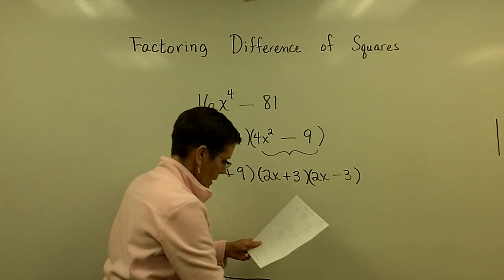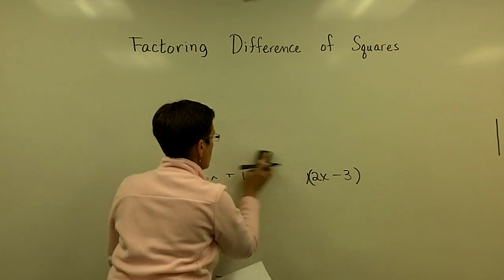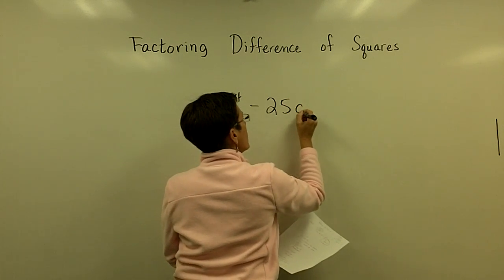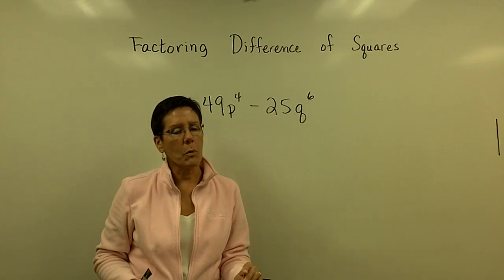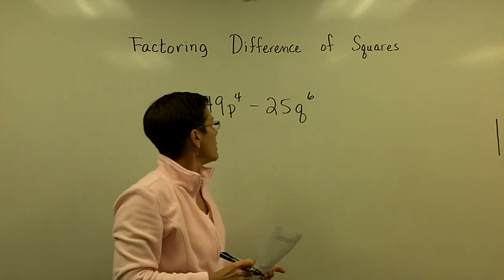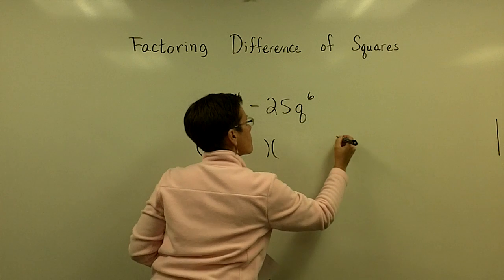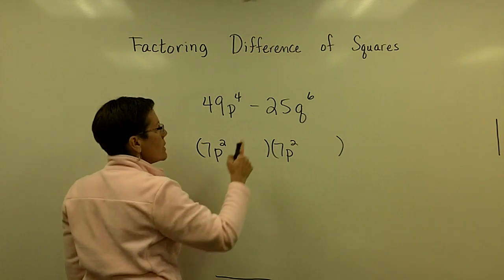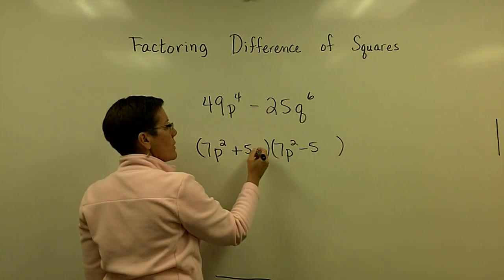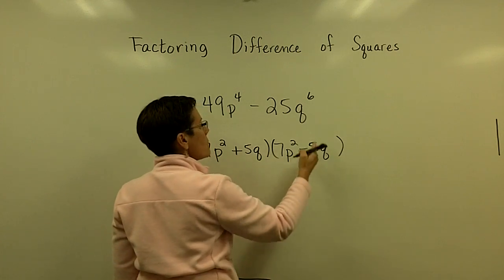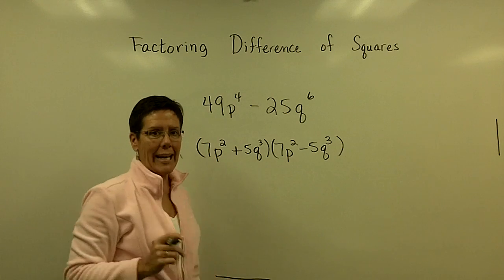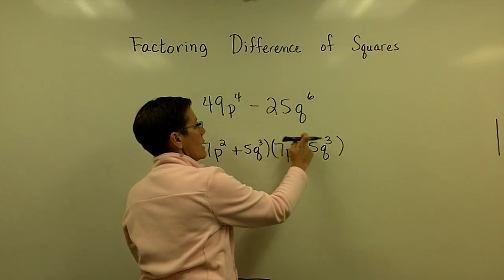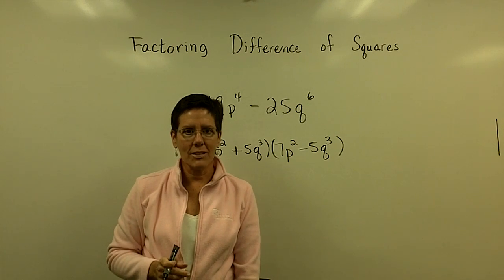One more: 49p to the 4th minus 25q to the 6th. I just need even exponents on my variables for them to be perfect squares. The square root of 49 is 7, so I use 7p squared — because 7p² times 7p² gives 49p to the 4th. The square root of 25 is 5, so I use 5q cubed — because q cubed times q cubed gives q to the 6th. The factored form is (7p² + 5q³)(7p² − 5q³). FOILing that out, the middle terms disappear and you get 49p to the 4th minus 25q to the 6th.